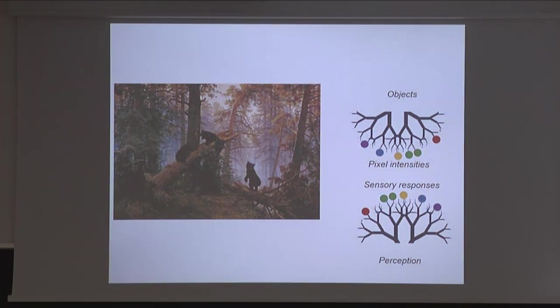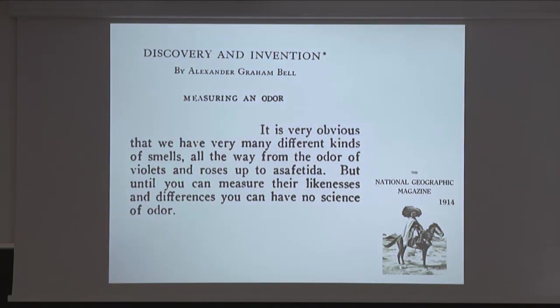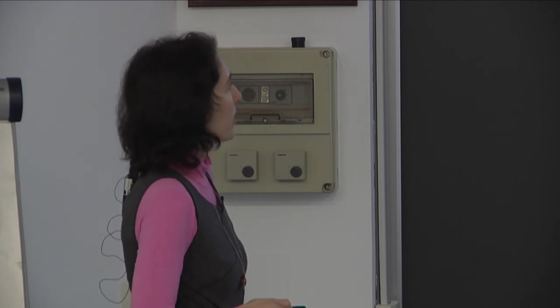When it comes to the sense of smell, I read an article written by Alexander Graham Bell more than a hundred years ago, where he lamented that we have a theory of light because we can measure light, and a theory of sound because we can measure sound waves — but how do we measure distances between odors? He said it's obvious that we have many different kinds of smells, from violets to roses, but until you can measure the likenesses and differences, you have no science of order. That's still an unresolved problem, and I'll describe our approach.